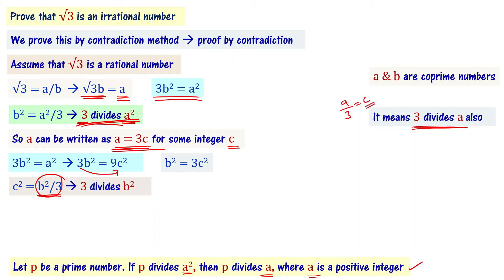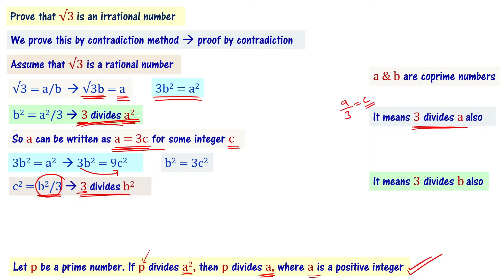From b squared equals 3c squared, we can say that 3 divides b squared. Going back to our earlier statement — since 3 is a prime number and 3 divides b squared — it means 3 can divide b also.